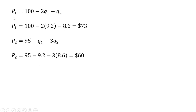For the price that Firm 1 will charge, we take its inverse demand and evaluate it at Q subscript 1 equals 9.2 and Q subscript 2 equals 8.6. Firm 1 will sell 9.2 units at $73 each. For Firm 2's price, we take Firm 2's inverse demand evaluated at 9.2 and 8.6 units of output. Firm 2 will charge $60 each for its 8.6 units of output.